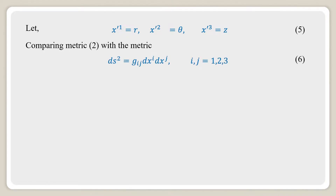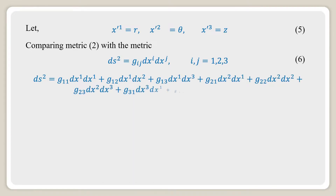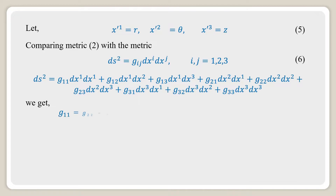Comparing the metric with ds squared equal to g_ij dx^i dx^j, where i and j go from 1 to 3, we expand the sum. The diagonal components are g_11 equal to g_22 equal to g_33 equal to 1, and all off-diagonal components g_12 equal to g_21 equal to g_23 equal to g_32 equal to g_13 equal to g_31 are equal to 0.